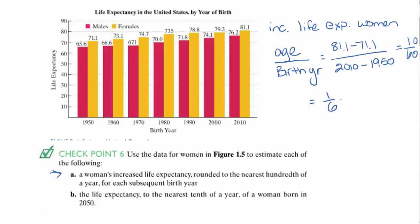The problem asks us to round to the nearest hundredth of a year for each subsequent birth year. So we divide that out, and it's equal to approximately 0.1 — going to a couple more decimal places, this is actually 0.16 repeating. Looking at the hundredths place, the next digit is 6, which rounds that up, giving us about 0.17.